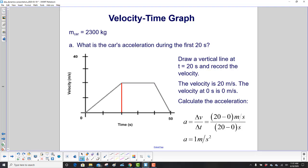What is the car's acceleration during the first 20 seconds? First let's draw a vertical line at t equals 20 seconds and record the velocity. They don't give us a lot of data on this graph, but that's okay. We have 10, 20, 30, 40, 50 on the time axis, and for velocity we have 10, 20, 30, and 40.